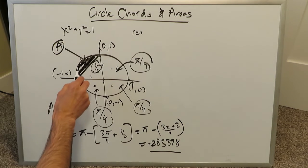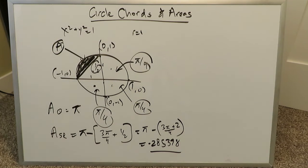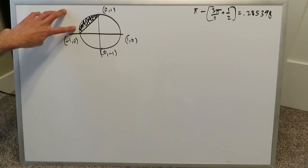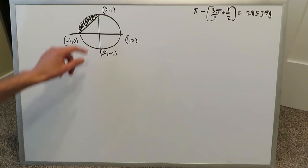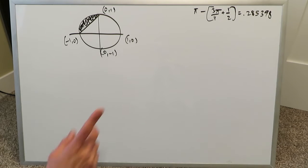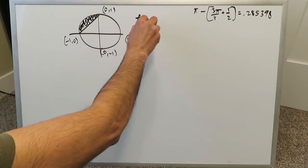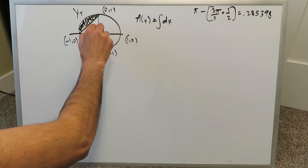Now we want to determine this shaded area using integral calculus. The shaded region is created by drawing a chord that does not go to the center but from one point to another on the circular curve. We've done it via geometry and got 0.285398 — our integral calculus answer should match that, and it will. First, we decide to integrate with respect to dx. We need to identify a top boundary curve and a lower boundary curve, and establish the interval from x equals minus 1 to x equals 0.